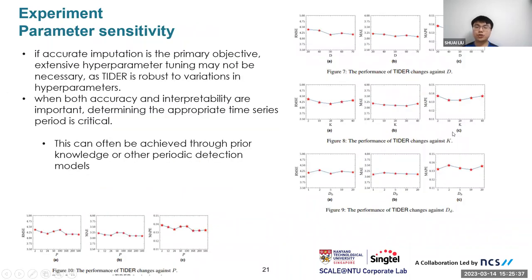The last experiment I want to show is parameter sensitivity. We can see that the performance of TIDER against different parameter settings is very stable. Even with the hyperparameter P, which is the period of time series, the performance is also very stable. Thus, we can draw a conclusion that if accurate imputation is the primary objective, we might not need to intensively tune the hyperparameters for this model, as it is very stable. But if we want both accuracy and explanatory power, then we shall determine the appropriate time series period. How to get this period can be achieved through prior knowledge of time series or from other periodic detection models.